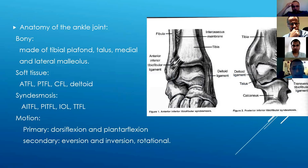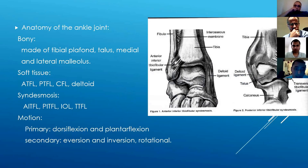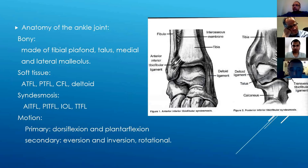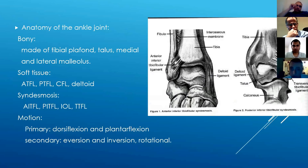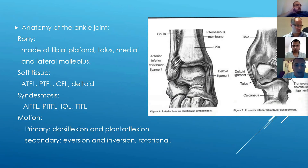The syndesmosis is quite important to know. It comprises the anterior and posterior inferior tibiofibular ligament, the interosseous ligament, and the transverse tibiofibular ligament. You need to know the ankle joint anatomy quite well. The primary motion of the ankle joint is dorsiflexion and plantar flexion. Secondary motions are inversion, eversion, and rotational. Inversion and eversion are primarily from the subtalar joint.